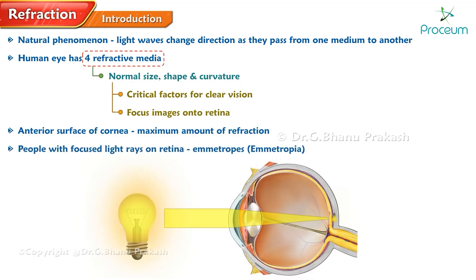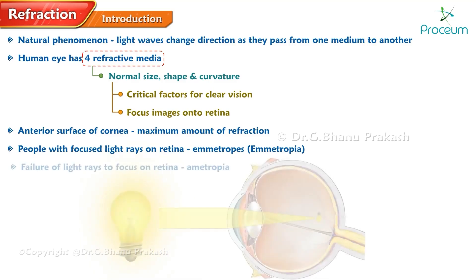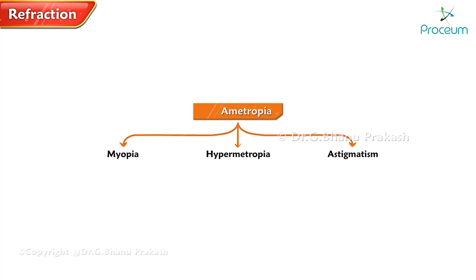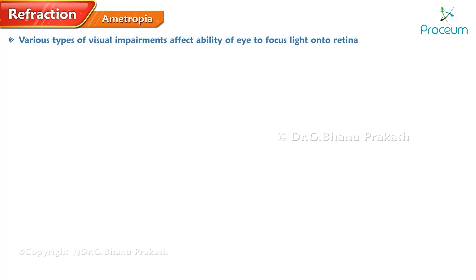Individuals who have perfectly focused light rays on their retina are known as emmetropes, and this condition is referred to as emmetropia. However, in cases where the light rays fail to focus on the retina, the condition is known as ametropia. Ametropia is a condition that encompasses various types of visual impairments that affect the ability of the eye to properly focus light onto the retina.